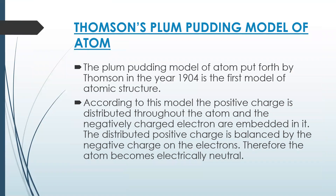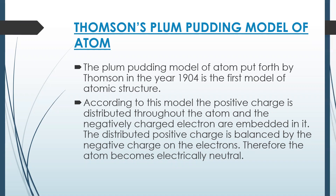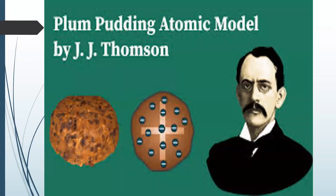The next theory is Thomson's Plum Pudding Model of Atom. Plum pudding is a type of cake. The Plum Pudding Model put forth by Thomson in 1904 is the first model of atomic structure. According to this model, the positive charge is distributed throughout the atom and the negatively charged electrons are embedded in it. The distributed positive charge is balanced by the negative charge on the electrons, and therefore the atom becomes electrically neutral. This is the image of the Plum Pudding atomic model by J.J. Thomson.